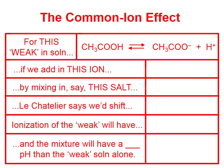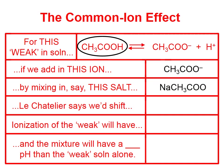We're going to look at the common ion effect by considering what happens to certain weak acids or weak bases in solution. For this weak in solution — acetic acid, which is a weak acid — if we add in the acetate ion, which you can see on the product side of the reaction, by mixing in the salt sodium acetate, Le Chatelier says we'd shift to the left.